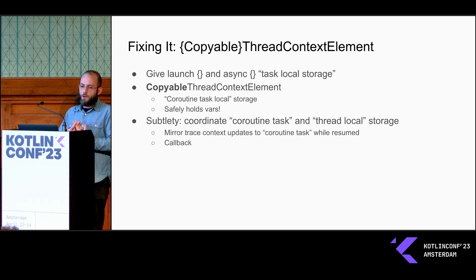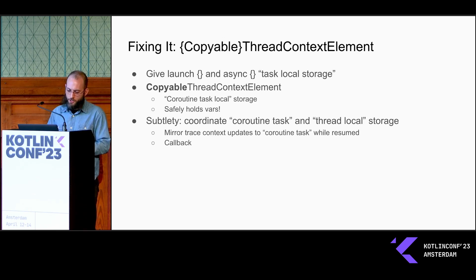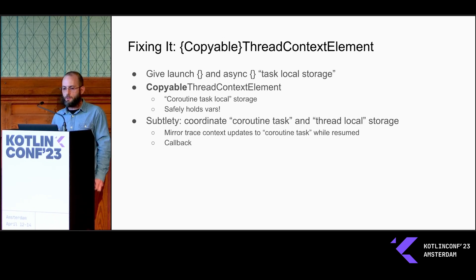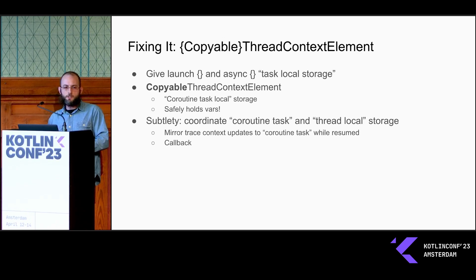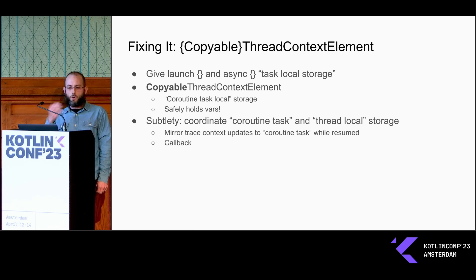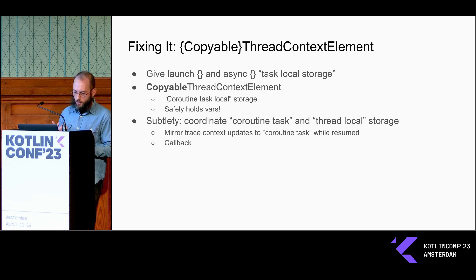Fixing this properly was something we weren't totally sure was actually possible with coroutines before we got started. There is a class called ThreadContextElement in coroutines that lets you install and remove thread local state as a coroutine starts and stops on a particular thread. But it has a critical limitation: it can't handle writes to the thread local while the coroutine is resumed. So if your coroutine is calling into plain Kotlin or plain Java code and that modifies the trace while it's running, the coroutine when it suspends again is going to lose all of those updates to the state, and so the trace winds up corrupt.